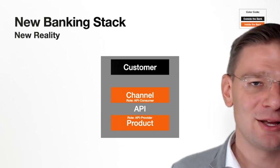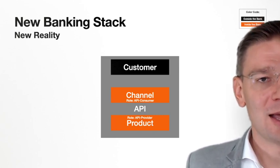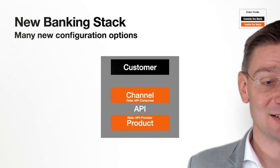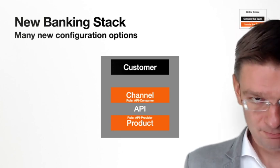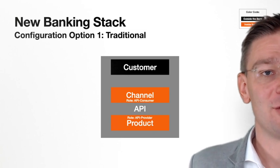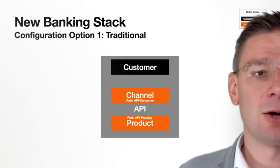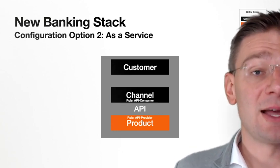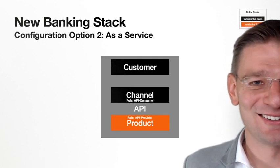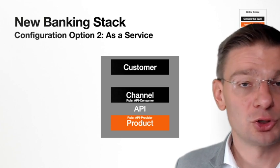Now that we have the separation of the three components of the banking stack — and they're really separate, not just half-linked as they are with open banking — we can play with externalizing some of these components. There are many new configuration options. In orange you see what the bank traditionally owns; in black, what is outside. The bank typically owns the channel and the banking product. With banking as a service, the bank does not own the channel anymore — it just has the product plus an API. So it's a headless banking product, and a fintech or another company can create their own channel on top of it.